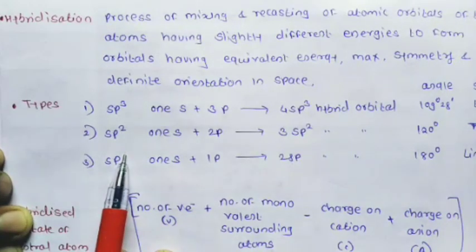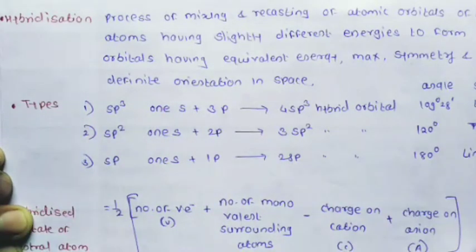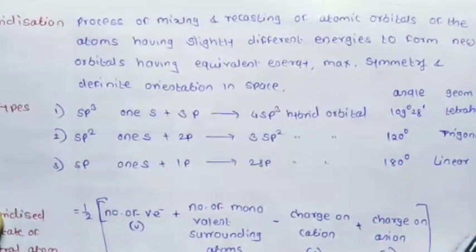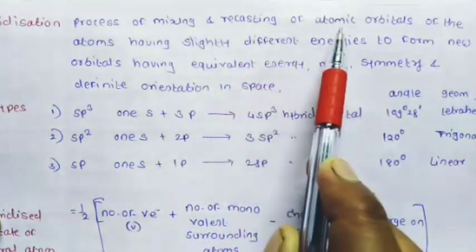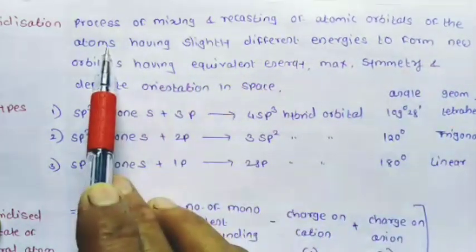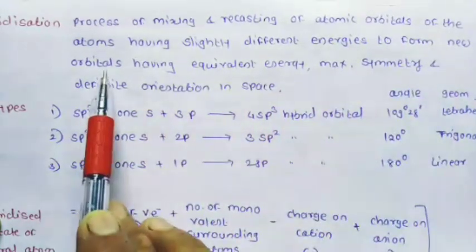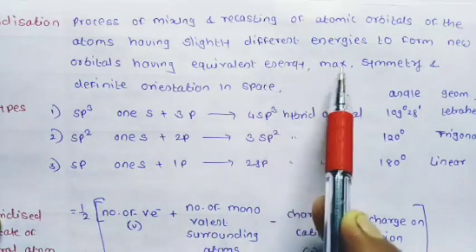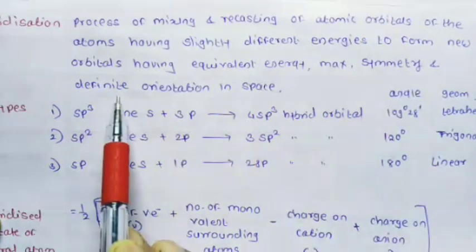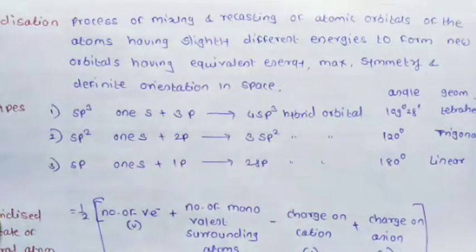Next we will study hybridization. Hybridization means it is a process of mixing and recasting of atomic orbitals of atoms having slightly different energies to form new orbitals having equivalent energy, maximum symmetry, and definite orientation in space. This is called hybridization.